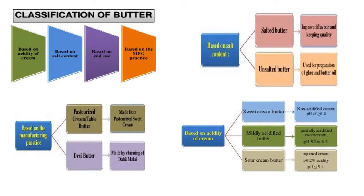Butter may be classified based on acidity of cream, based on salt content, based on end use, or based on manufacturing practice. Based on salt content, there is salted butter or unsalted butter. Unsalted butter is used mainly for preparation of ghee or butter oil, whereas salted butter has better flavor and keeping quality. Based on manufacturing practice, there is pasteurized cream or table butter made from pasteurized sweet cream, and desi butter made by churning of desi malai.